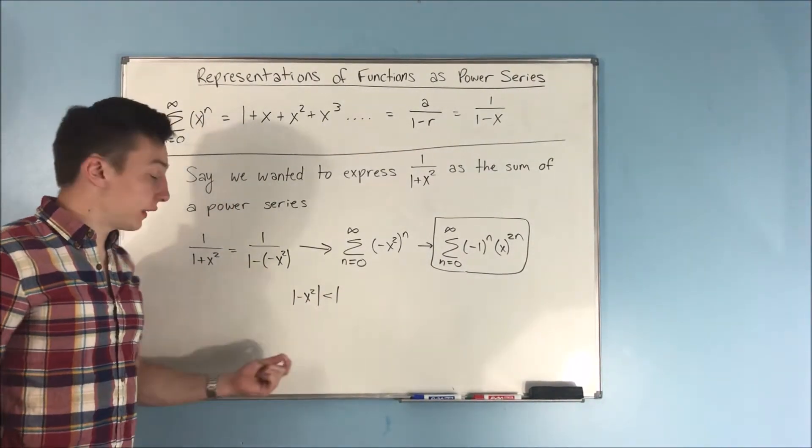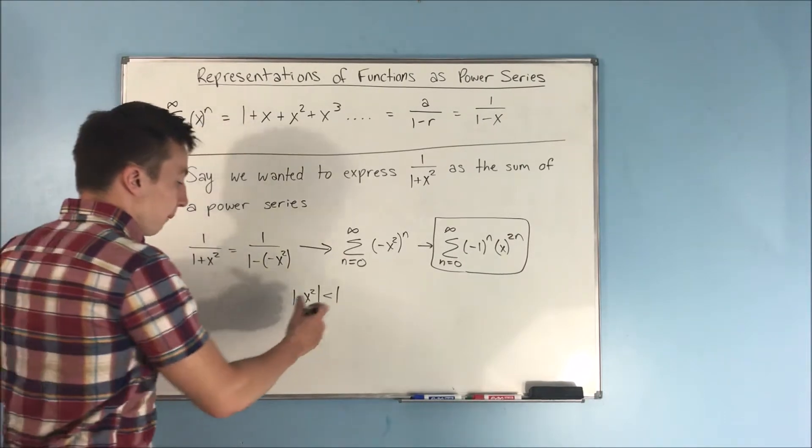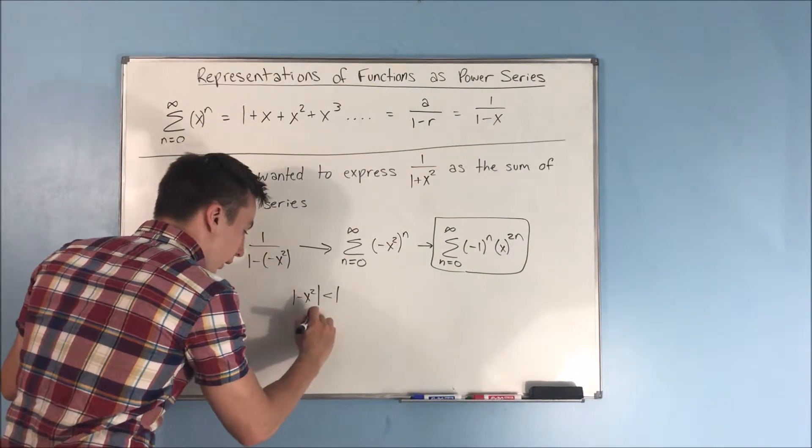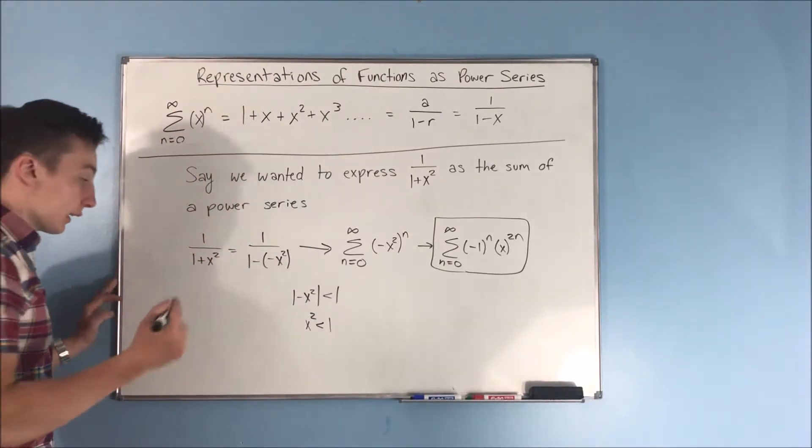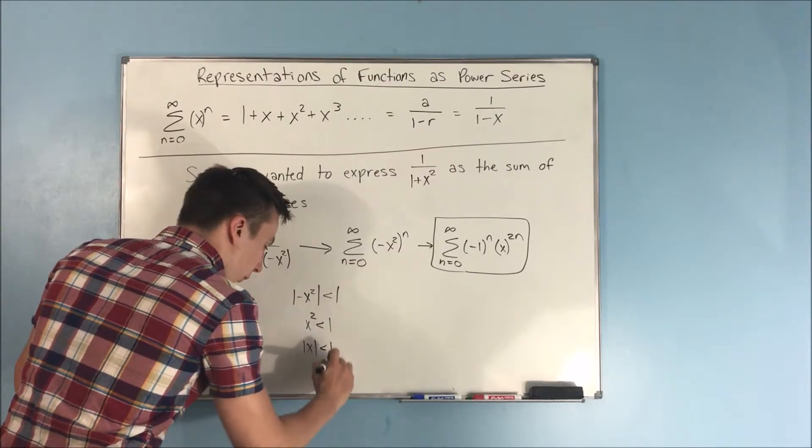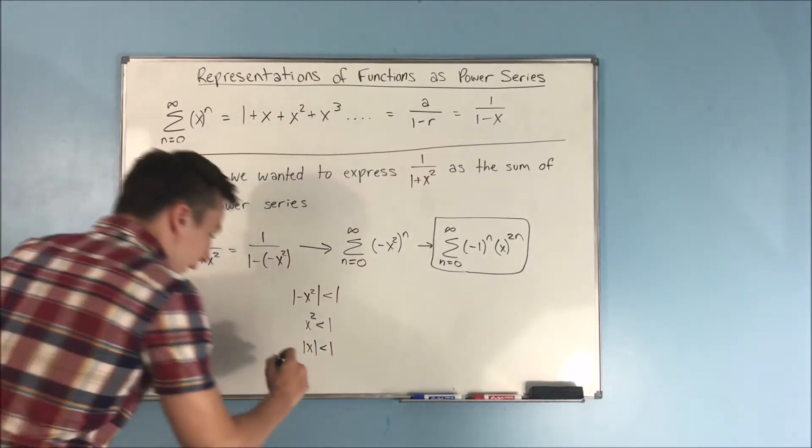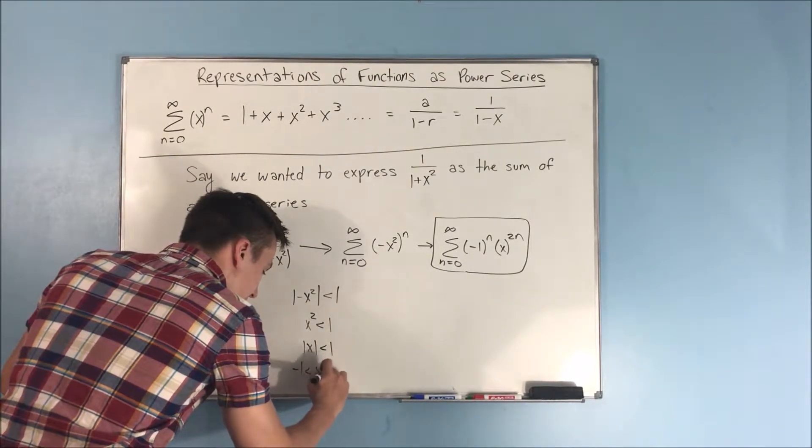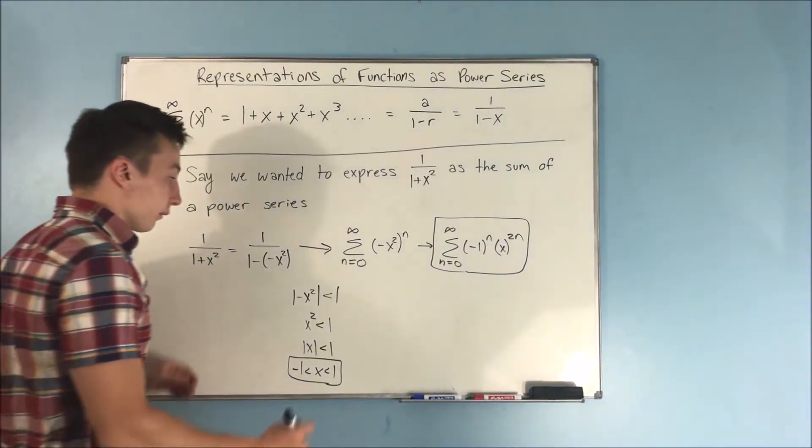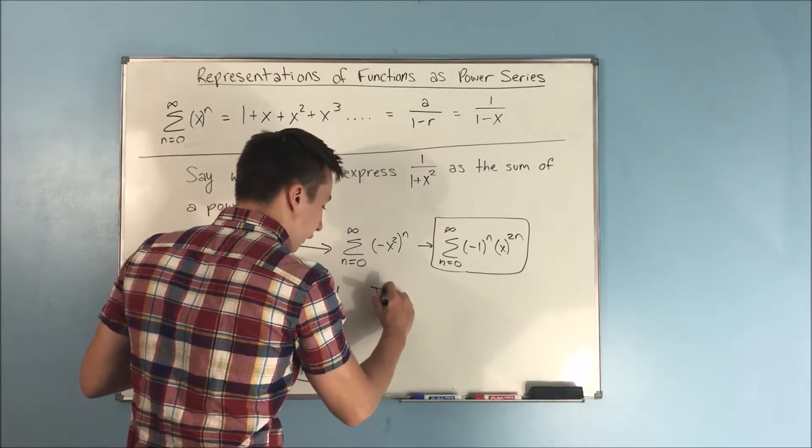Now to kind of simplify this down here, what we can do is just use our absolute value, so we get x squared is less than 1. That is the same thing as saying that the absolute value of x is going to be less than 1, which means that x is going to be in between negative 1 and 1, and that is your interval. That is your interval of convergence.